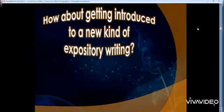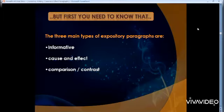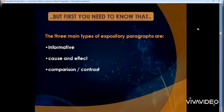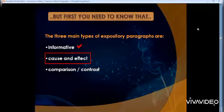Now let's get introduced to a new kind of expository writing. The three main types of expository paragraphs are: informative — that's when you're only giving information and facts, which we already did in class; cause and effect paragraphs — which is what we're focusing on now, learning how to write them and the steps involved; and finally comparison/contrast paragraphs, which we'll talk about later.